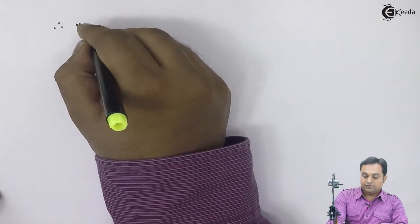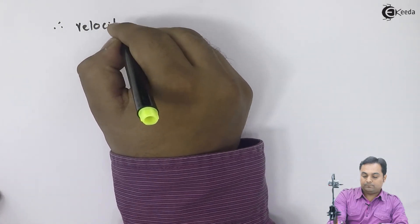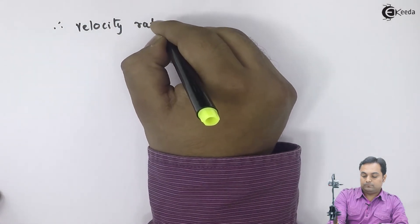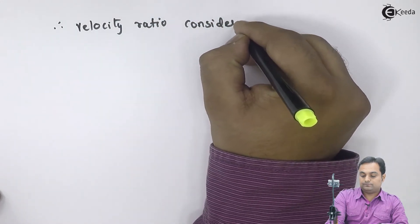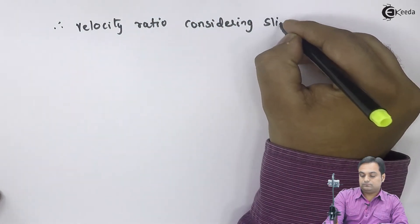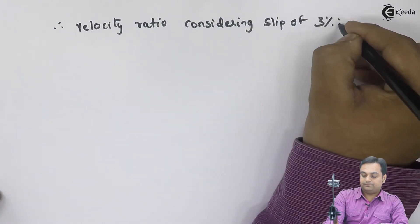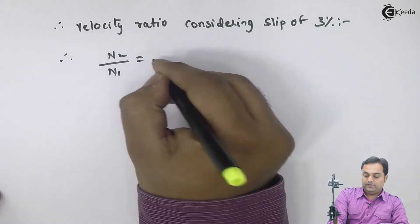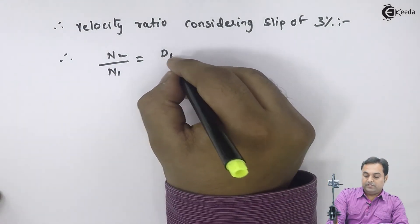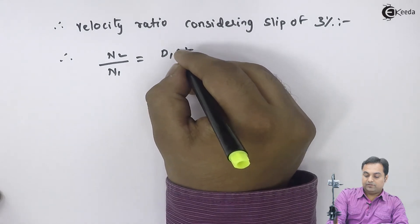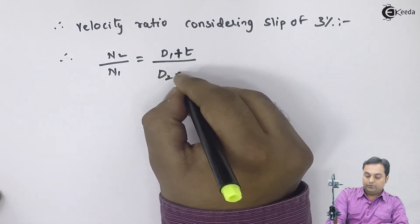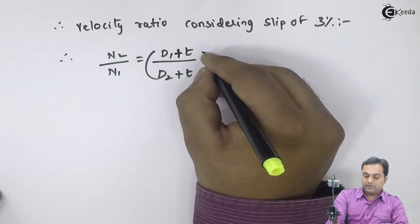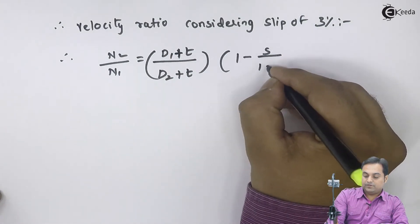Therefore, velocity ratio considering slip of 3 percent - the velocity ratio will be n2 upon n1 is equal to d1 plus t (because thickness also needs to be considered) upon d2 plus t, multiplied by 1 minus s upon 100.